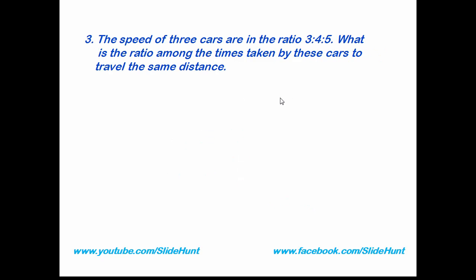Question number 3: The speed of 3 cars are in the ratio 3 is to 4 is to 5. What is the ratio among the times taken by these cars to travel the same distance? We have to find out the ratio of time taken by the 3 cars to travel the same distance. We know speed and time taken are inversely proportional to each other. That means if speed is more, the time taken is less, and if speed is less, the time taken is more.